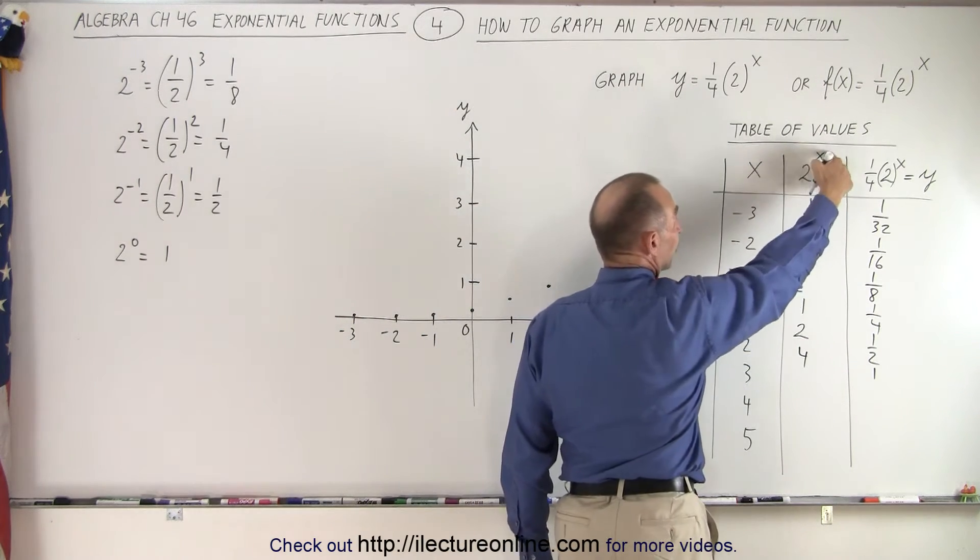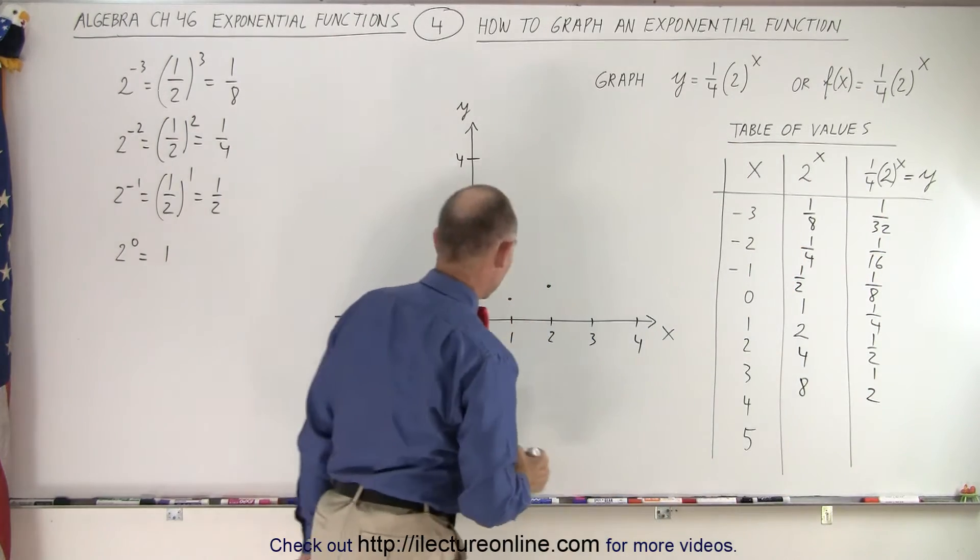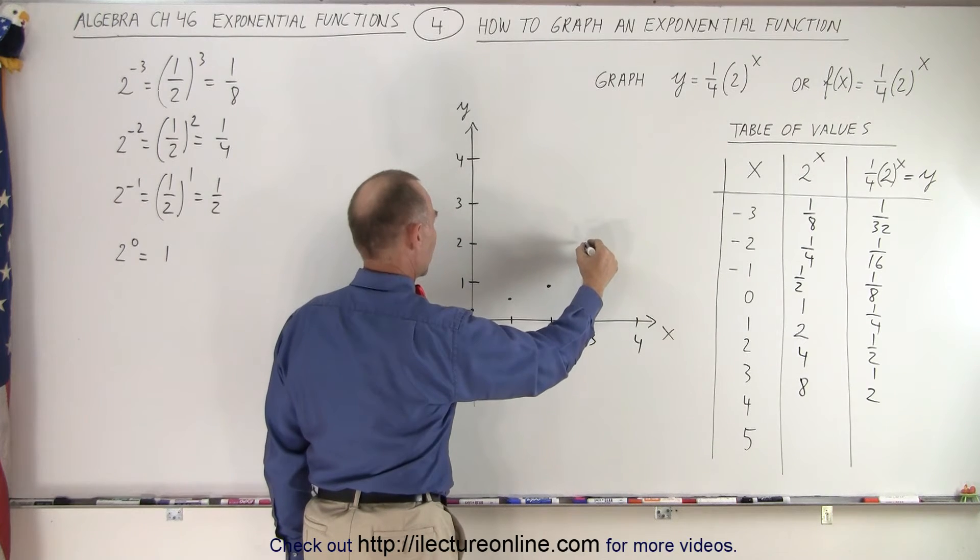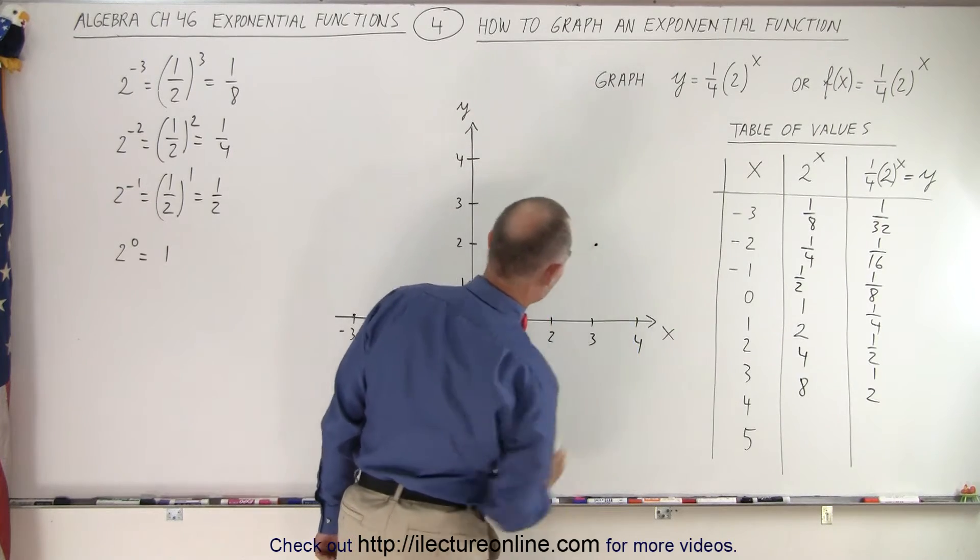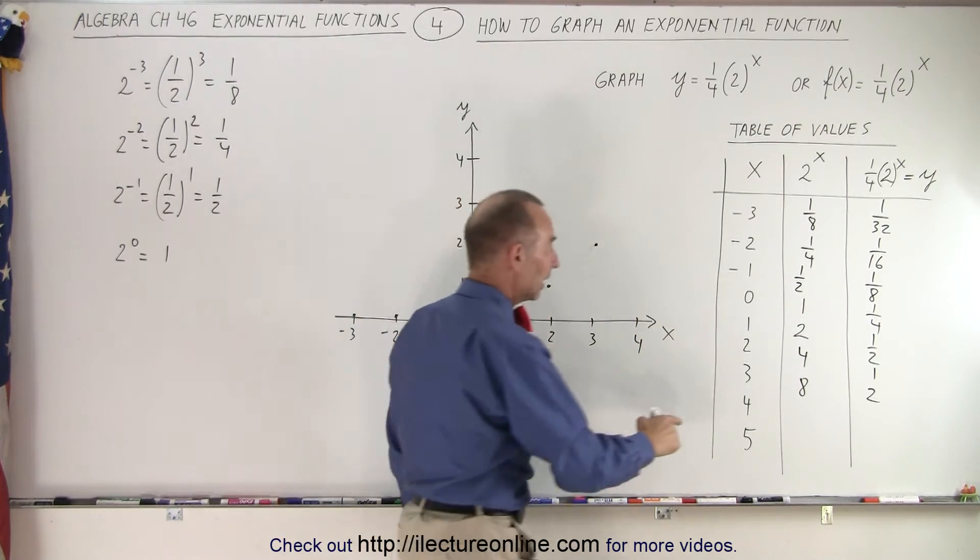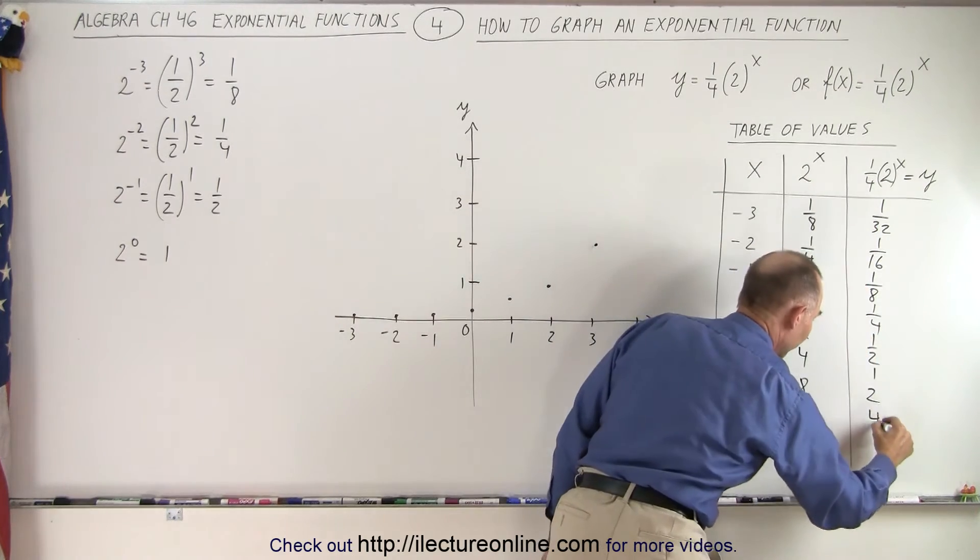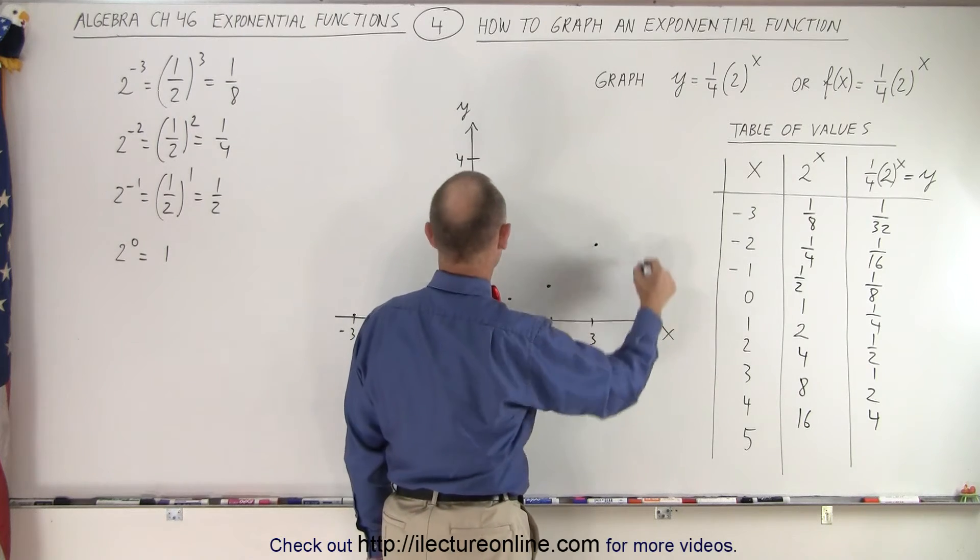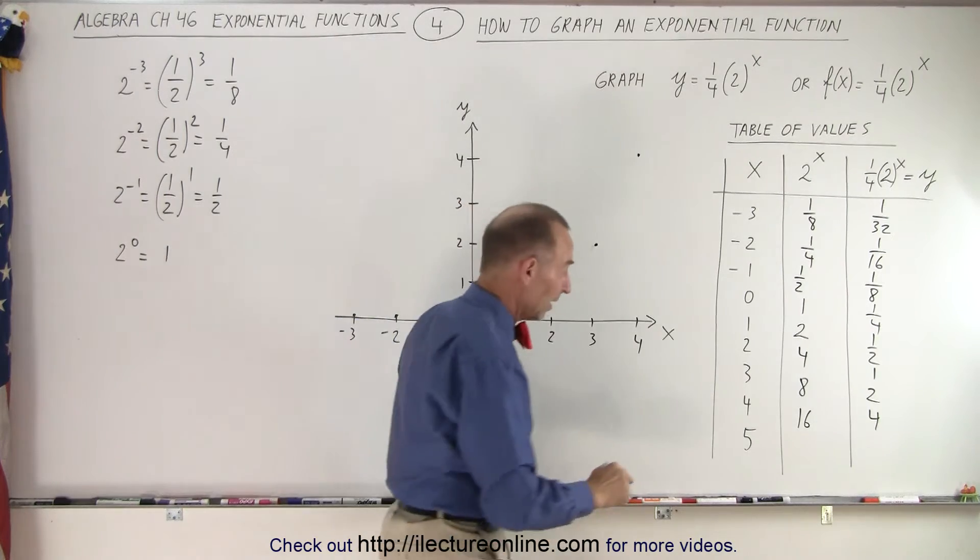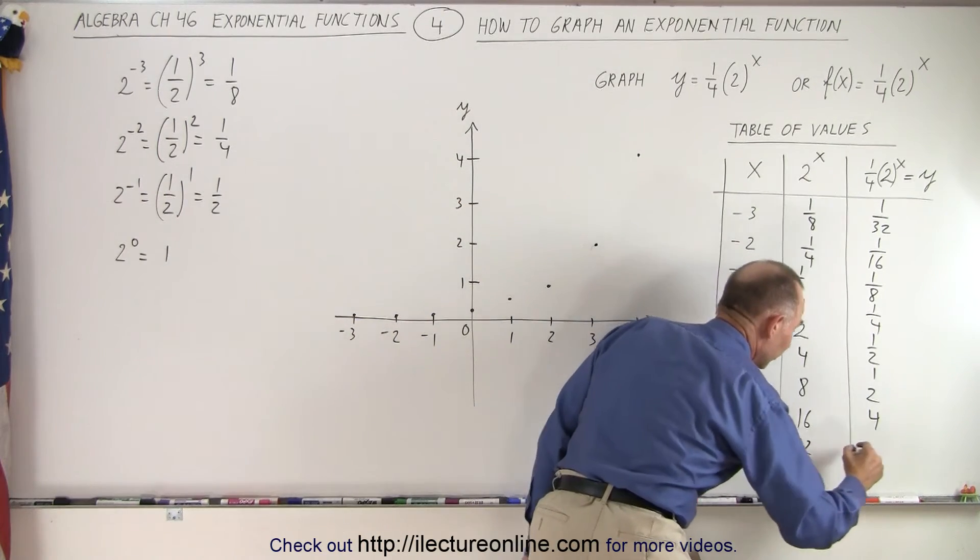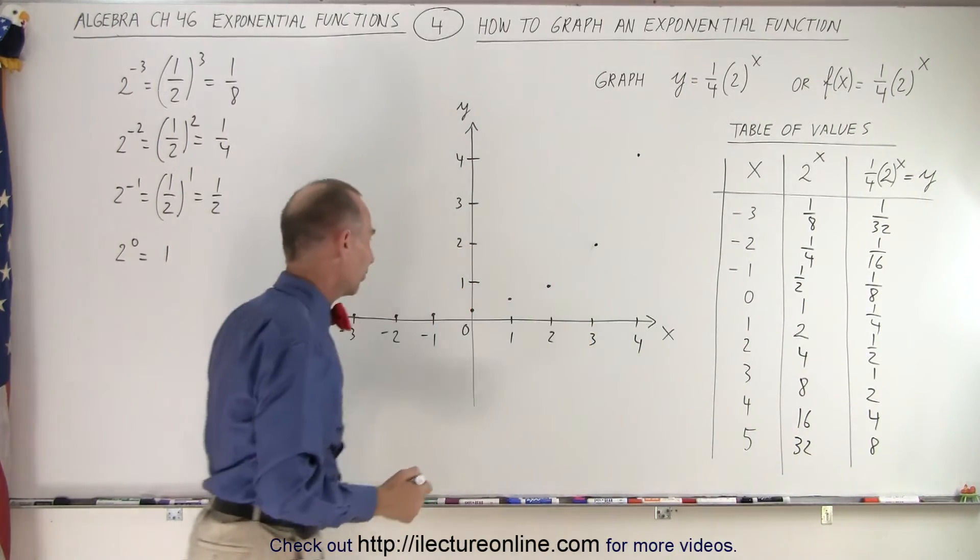When x equals 3, 2 to the third power, that's equal to 8. Divide by 4 is equal to 2. So when x equals 3, we're now y equals 2. Did I put that in the right place? There we go. And finally, when x equals 4, 2 to the fourth power is 16. 16 divided by 4 is 4. So that would be when x equals 4, y equals 4. I guess I'm running out of board space here, but let's do it one more time. 2 to the fifth power is 32 divided by 4, which is 8. And of course, when x equals 5, it's equal to 8. That's off the chart.